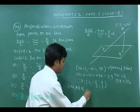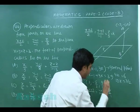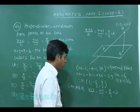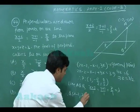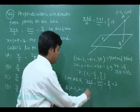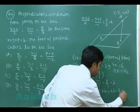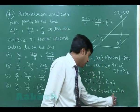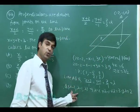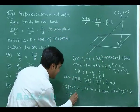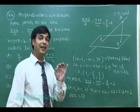A general point on line AQ is (λ−2, λ−1, λ). Since Q lies on the plane x+y+z=3, substituting gives (λ−2) + (λ−1) + λ = 3, so 3λ = 6, meaning λ = 2. Therefore Q = (0, 1, 2).